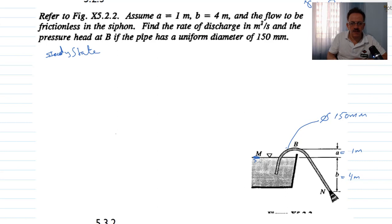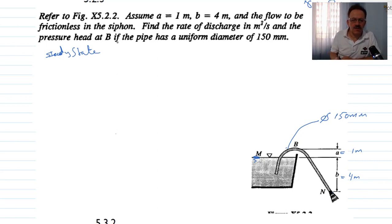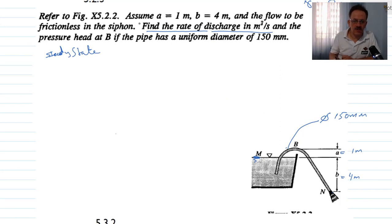The pipe used has a diameter of 150 millimeters. We need to find: first, the rate of discharge Q from this pipe, and second, the pressure head at point B.